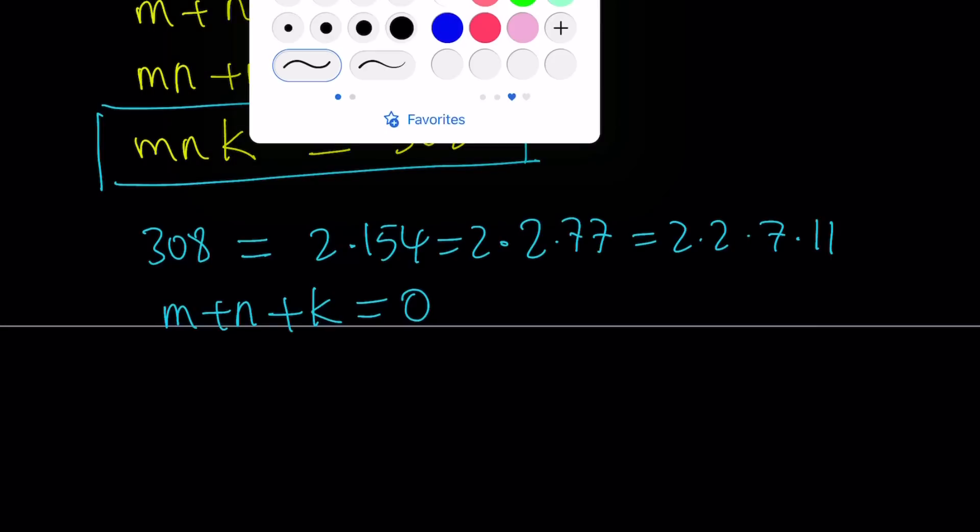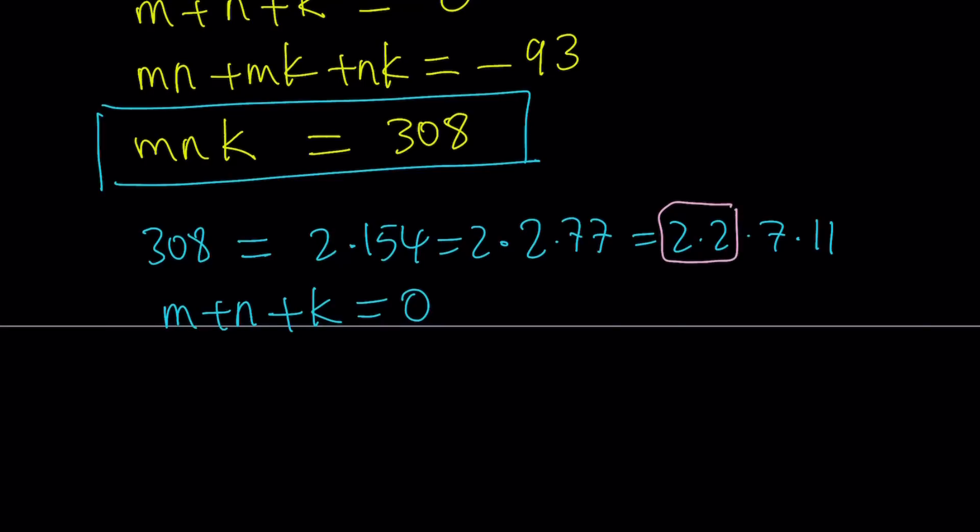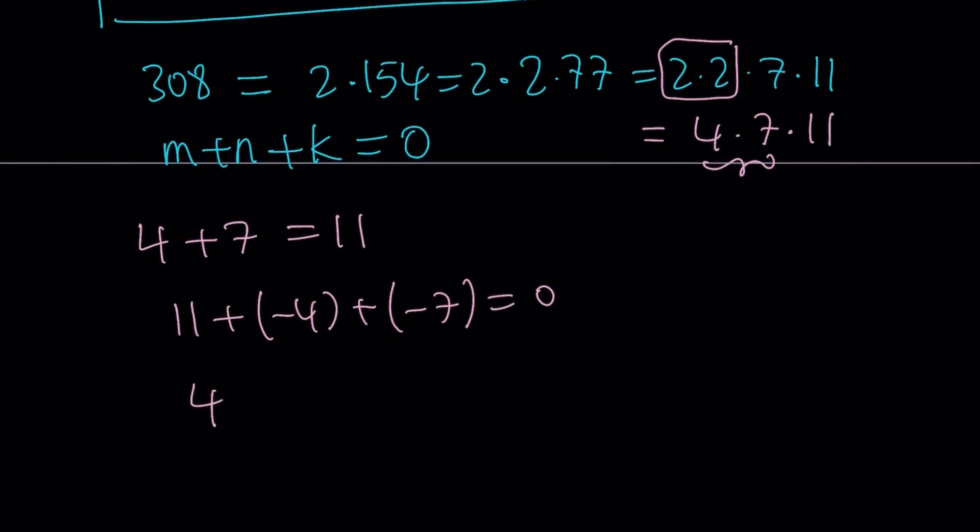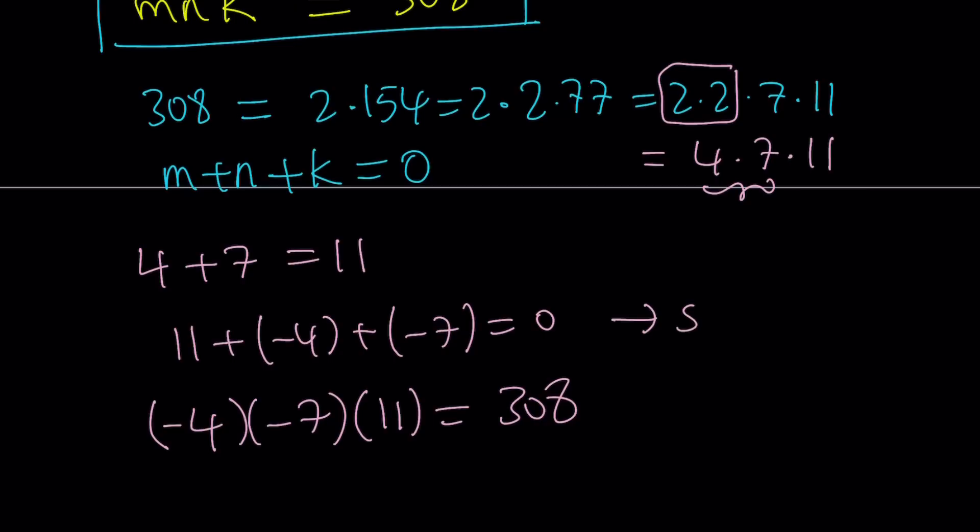Take a look at the following. If I kind of group the twos together and write this product as 4 times 7 times 11, I immediately realize, maybe not immediately all the time, but if you looked at it before, 4 plus 7 is equal to 11. So why is that important? Well, it's important because if you put everything on the right-hand side, you're going to get the following: 11 plus negative 4 plus negative 7 is equal to 0. And if you multiply negative 4 times negative 7 times 11, you're going to get 308. That's interesting. So that is the product and that is the sum. This is sum, this is the product. So far, so good.